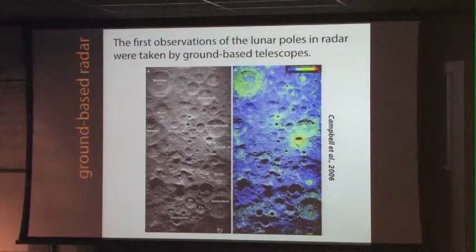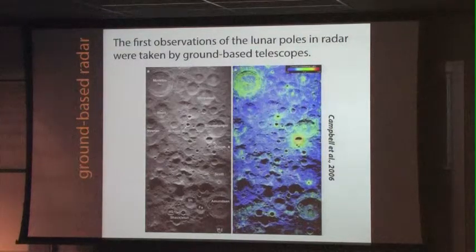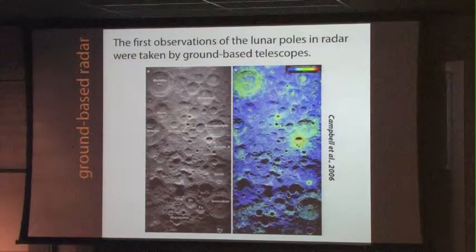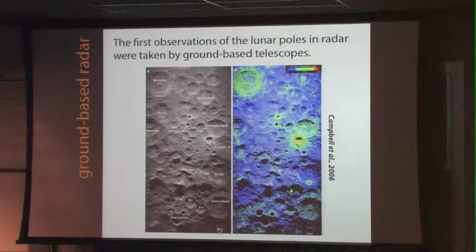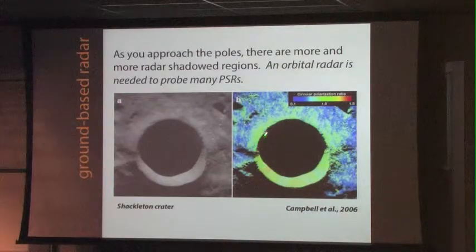But we're here to talk about the Moon. Here is a radar image of the Moon taken from the ground. For many years we've been taking radar images of the Moon from Earth — we're fortunate that the Moon is the closest celestial body to us, making it easy to get high-resolution images at various wavelengths. Here's a great example from Campbell et al. — you can see fresh craters with blocky ejecta — but as we approach the poles, there are more and more shadowed regions. Since the Moon is synchronously rotating, it's very difficult to see the poles from Earth, so you really need an orbital radar.